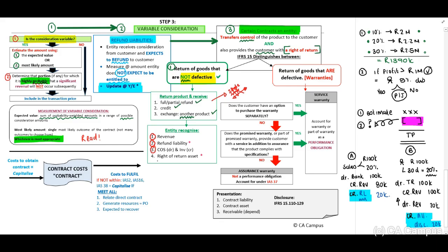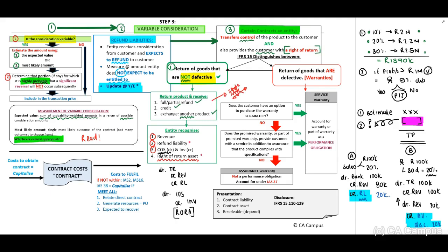The entity must recognize revenue, a refund liability, cost of sales, inventory, and a right of return asset account. For the sales transaction, the entity debits trade receivables or bank and credits revenue and the refund liability. We also need to account for the cost of sales portion: debit cost of sales and credit inventory, then recognize the right of return asset. Remember that the refund liability and the right of return asset should both be updated at the end of each reporting period.